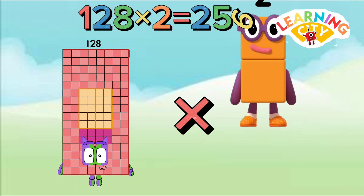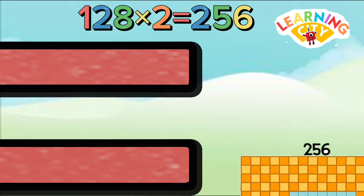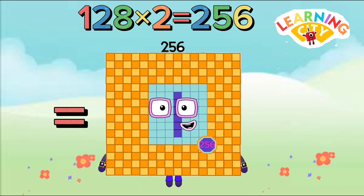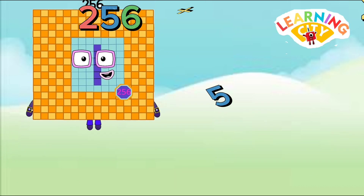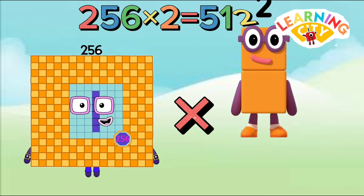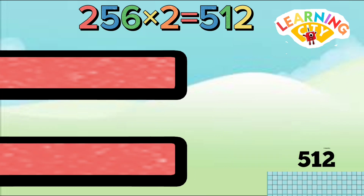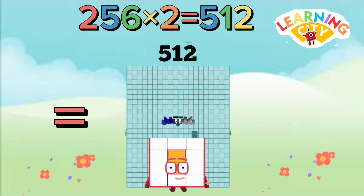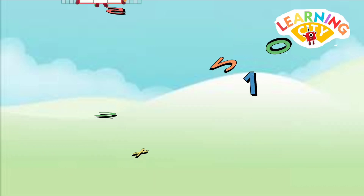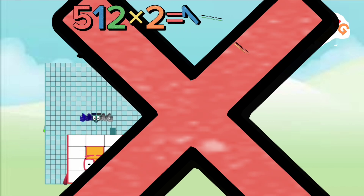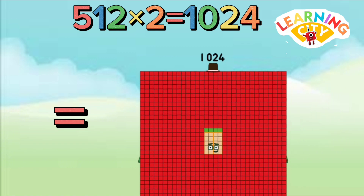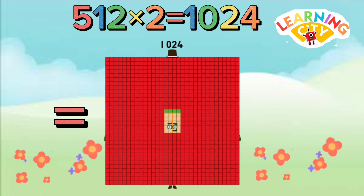Sixty-four times two equals one hundred twenty-eight. One hundred twenty-eight times two equals two hundred fifty-six. Two hundred fifty-six times two equals five hundred twelve.